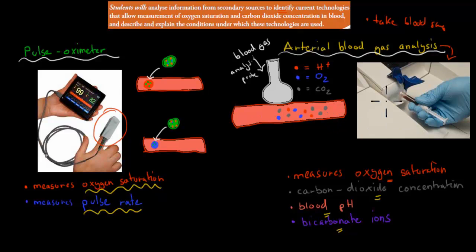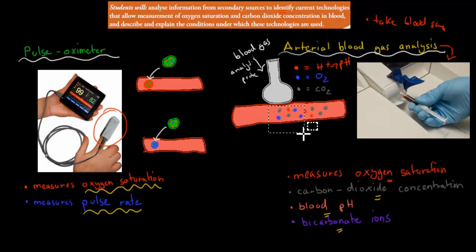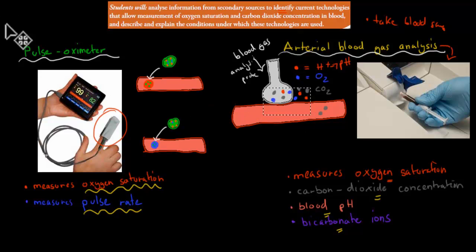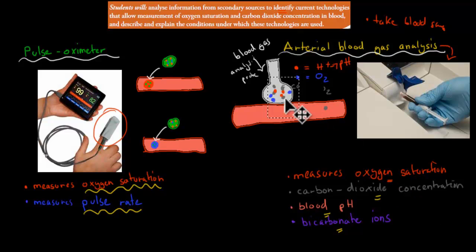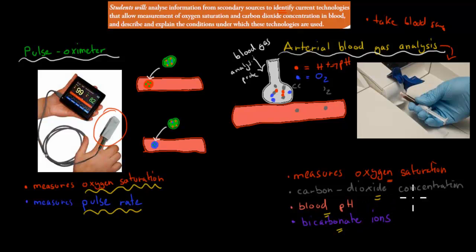Once the blood is in the system, you have these molecules: the red ones are hydrogen ions, which represent our pH — the more of these we have, the lower our pH. The blue ones are oxygen molecules, and the gray ones are carbon dioxide molecules. These are all the things we're testing with this machine. We've got a blood gas analysis probe, and when these molecules flow past, they move into the probe, and once they've moved in we can see how much is in there — that's how we get our reading, checking how much carbon dioxide, oxygen, and hydrogen ions we have.